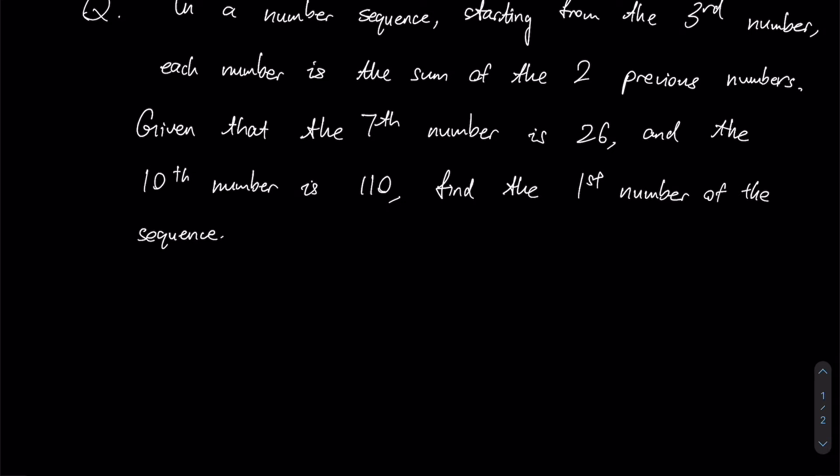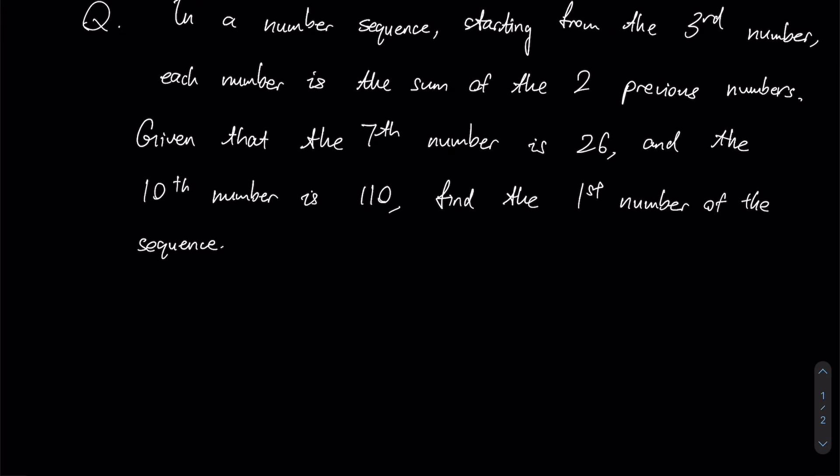Looking at this question, we are presented with a number sequence where, starting from the third number onwards, each number is the sum of the two previous numbers. The first thing that should come to mind is that this must be a Fibonacci sequence, because this statement defines what the Fibonacci sequence must be.